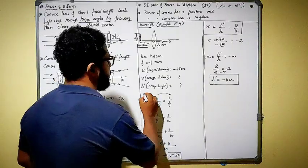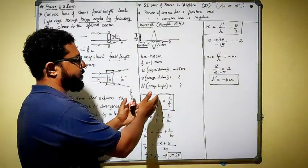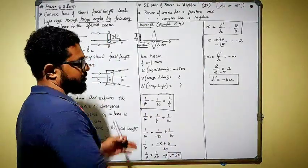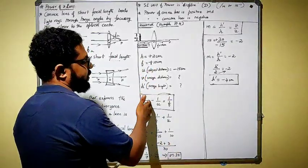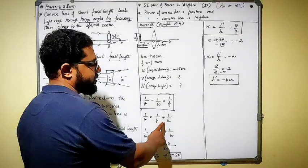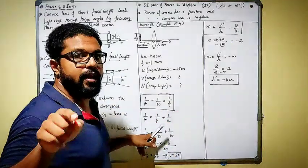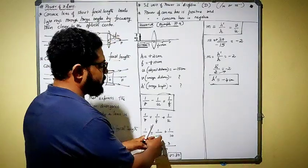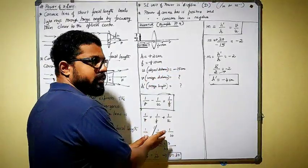We already know the lens formula: 1/V − 1/U = 1/F. Note this is different from the mirror formula which is 1/V + 1/U = 1/F. Using this formula, I know U and F, so I need to find V. Rearranging: 1/V = 1/F + 1/U. Now substituting the values along with sign conventions — focal length is plus 10, object distance is minus 15.